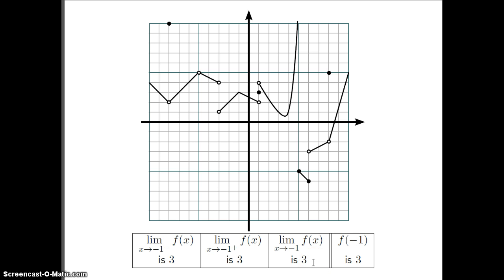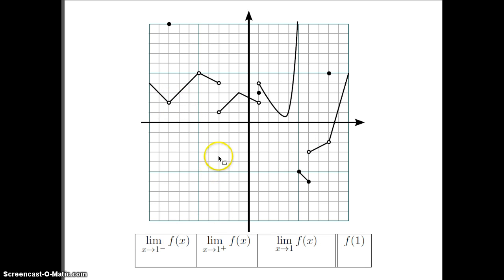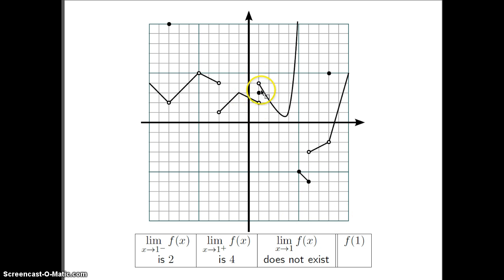We'll look at that again in section 2.5. You should note that the limit and the function value don't have to match — they can both be numbers and be different, as we saw earlier. The next a value is 1. Looking from the left, the y value appears to be 2. Looking from the right, the y value appears to be 4. Since these two y values — the two guesses — don't match, the two-sided limit does not exist. However, the value of the function at 1 is in the domain, and the assigned y value there is 3. So you can get these three different numbers.